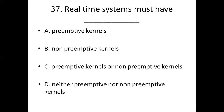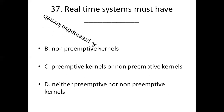Thirty-seventh bit. Real-time system must have dash. Option A: Primitive kernels. Option B: Non-primitive kernels. Option C: Primitive kernels or non-primitive kernels. Option D: Neither primitive nor non-primitive kernels. Answer: Option A, Primitive kernels.